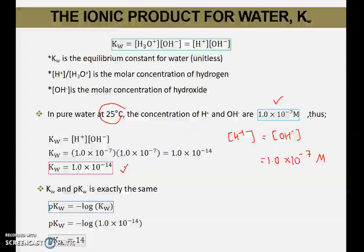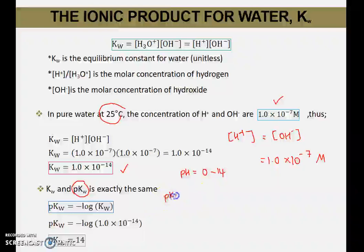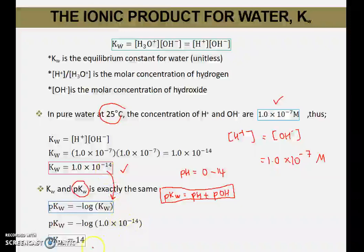pKw is similar to pH. The pH scale runs from 0 to 14, and pKw is the maximum number on that scale. pKw is the negative log of Kw. Substituting Kw = 1.0×10⁻¹⁴ gives pKw = 14. Additionally, pKw equals pH plus pOH, so pH + pOH = 14.